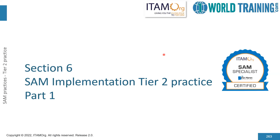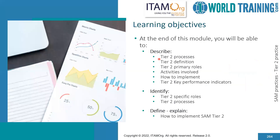With that solid background in tier one, let's move on to tier two. In tier two, you will be focusing on the tier two processes, the definition of tier two, the tier two primary roles, the activities involved, how to implement them, and the key performance indicators for tier two. When I mention the tier two primary roles, we look at specific roles, and we also look at tier two specific processes.